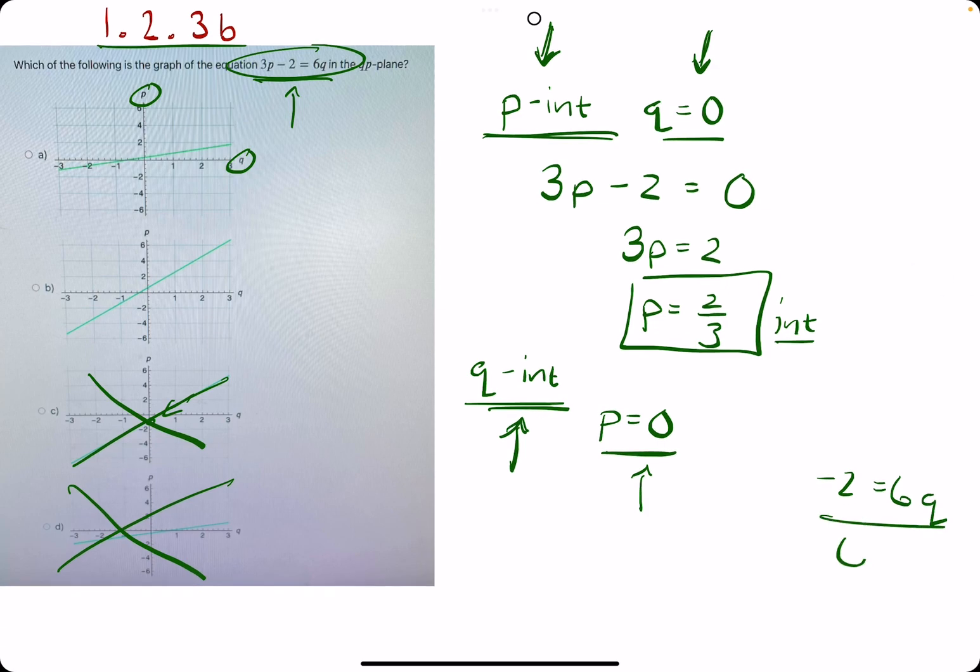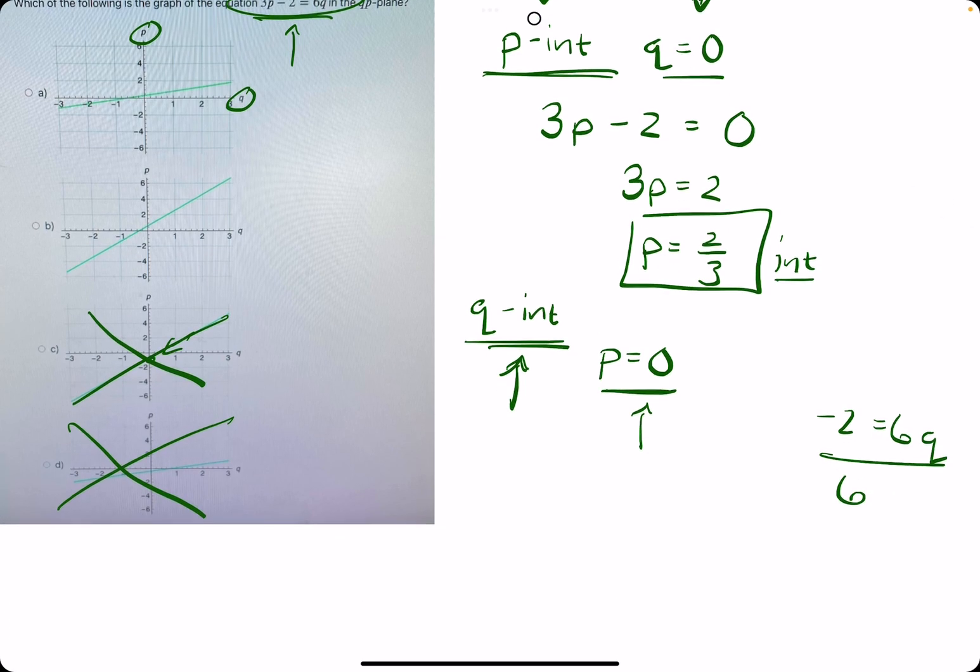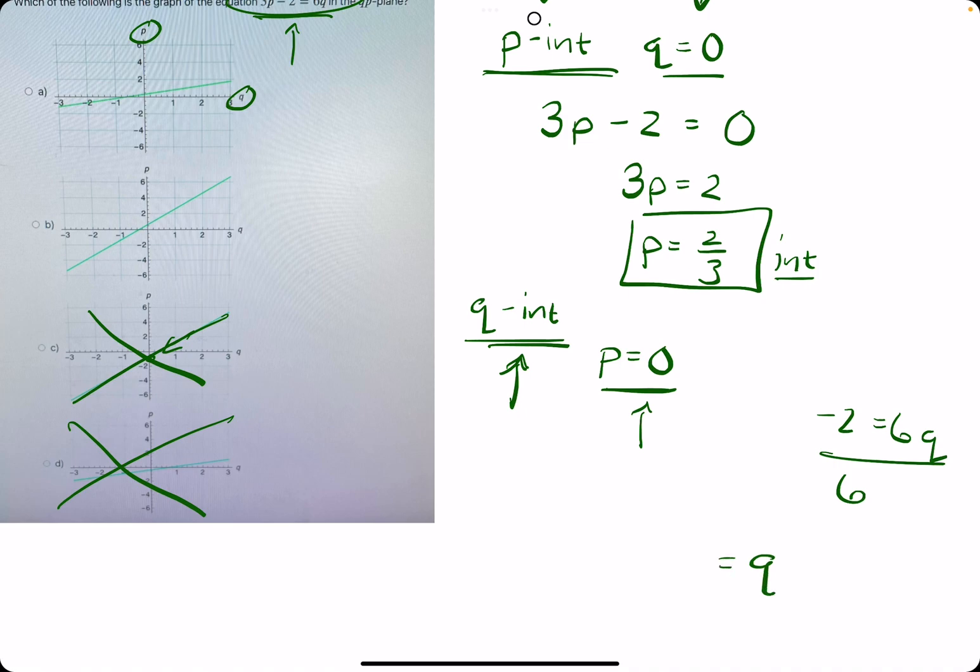To get q by itself, we divide by 6. We find that q equals negative 2/6, or negative 1/3.